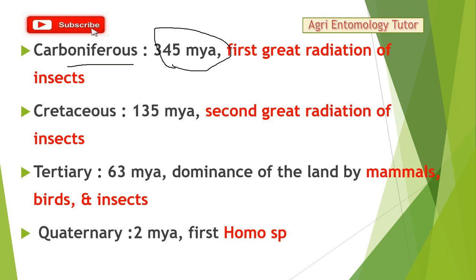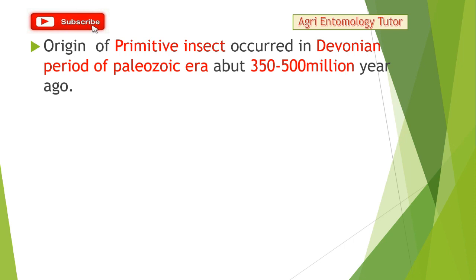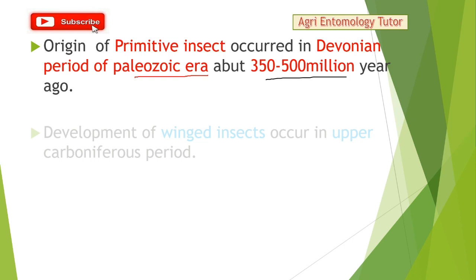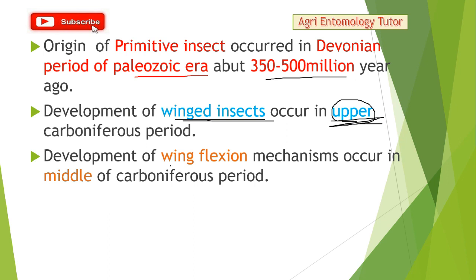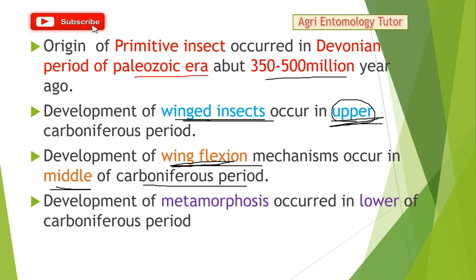In the Quaternary period, about 2 million years ago, the first Homo sapiens appeared on Earth. To summarize: primitive insects originated in the Devonian period of the Paleozoic era (350–500 million years ago); winged insects developed in the upper Carboniferous period; the wing flexion mechanism appeared in the middle Carboniferous period; and metamorphosis occurred in the lower Carboniferous period.